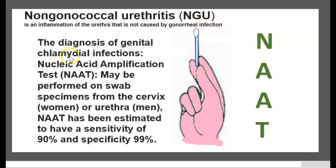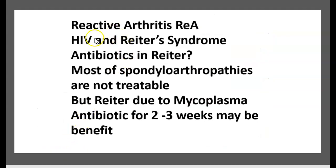Diagnosis of genital Chlamydia infection is made by nucleic acid amplification test (NAAT), which may be performed on a swab specimen from the cervix in women or the urethra in men. NAAT has an estimated sensitivity of 90% and specificity of 99%. Antibiotics can be given in Reiter syndrome for two to three weeks, as there is no specific treatment for reactive arthritis otherwise.